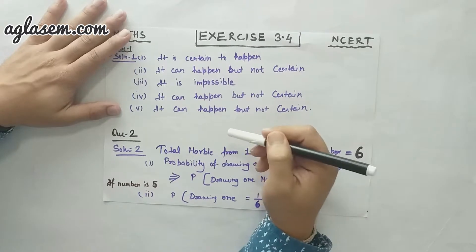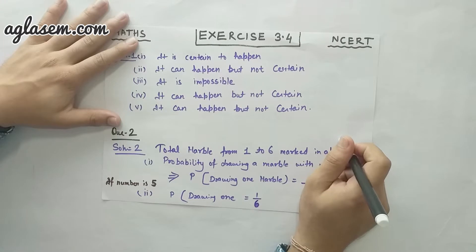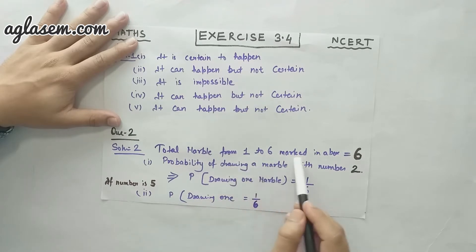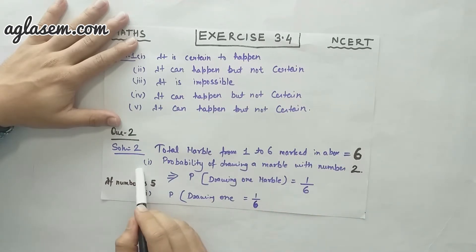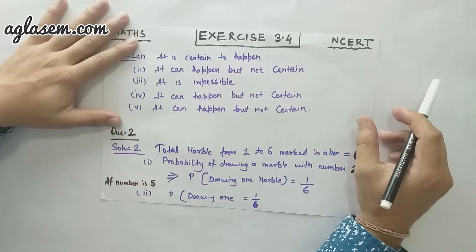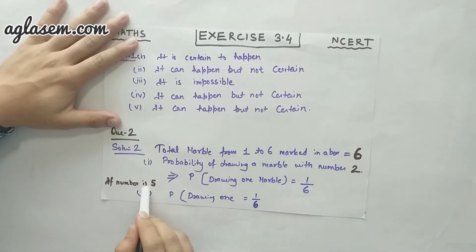Now let's move to the second question: there are six marbles in a box, numbered from one to six, marked on each of them. This question has two parts. The first part asks: what is the probability of drawing a marble with number two? The total marbles are six, so the probability of drawing marble number two is one by six. The second part asks: what is the probability of drawing a marble with number five? The probability is the same — one by six.